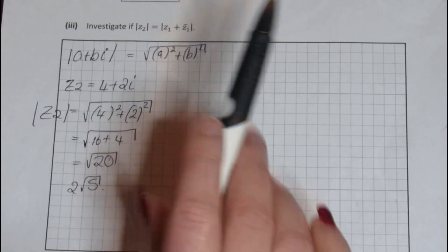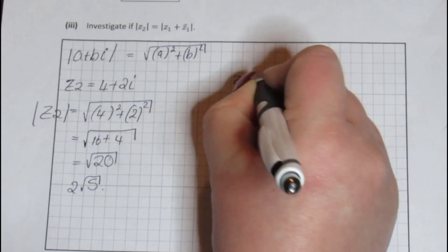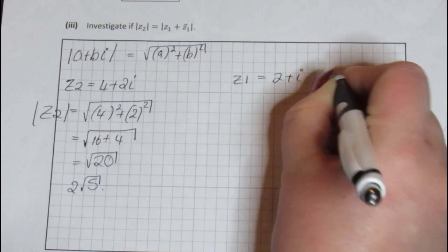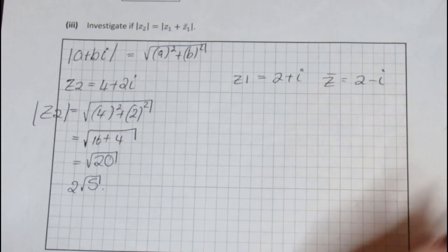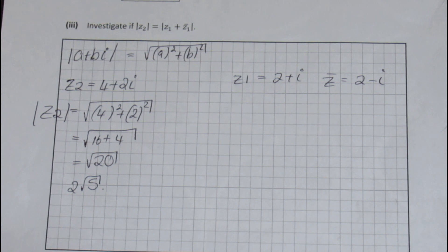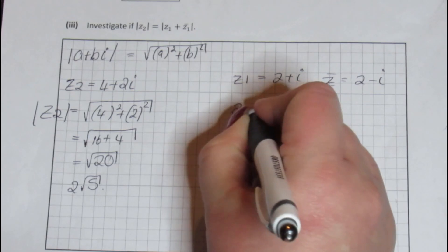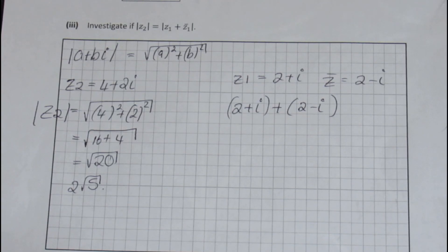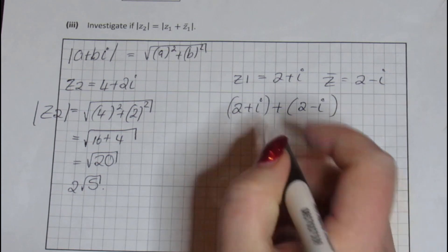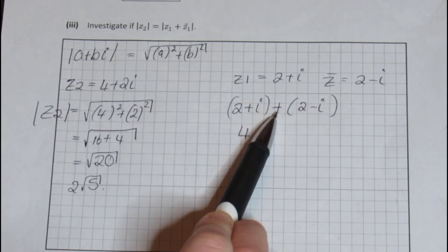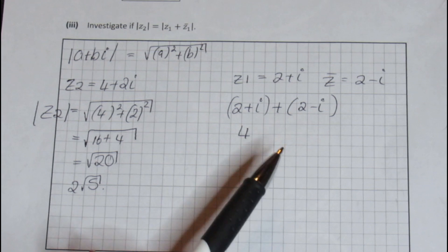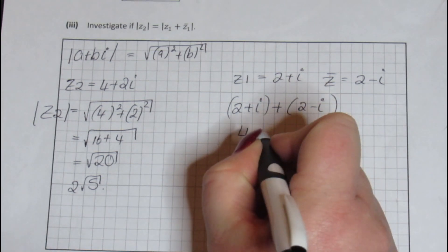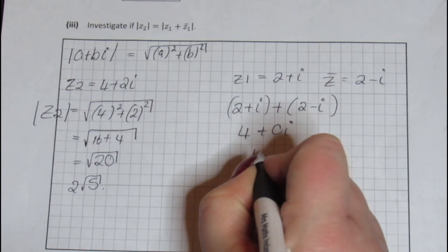Now we look at Z1 plus Z1 bar. Z1 is 2 plus i. Z1 bar is 2 minus i. So let's add those together first of all. Let's not worry about the modulus for this moment. 2 plus i plus 2 minus i. So when we're adding complex numbers or subtracting complex numbers, you keep the reals together, you keep the imaginary numbers together. 2 plus 2 gives me 4. Plus i, plus minus i. Again you can do that on your calculator if you want. It gives us nothing. So we're just left with 4.